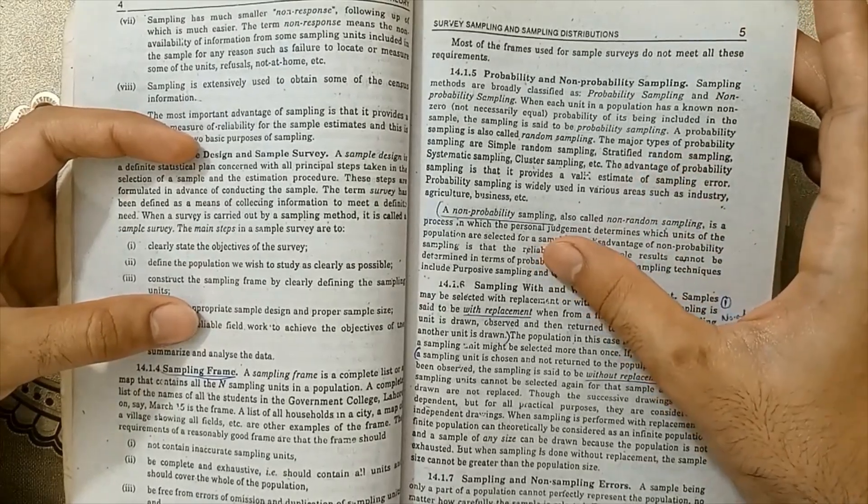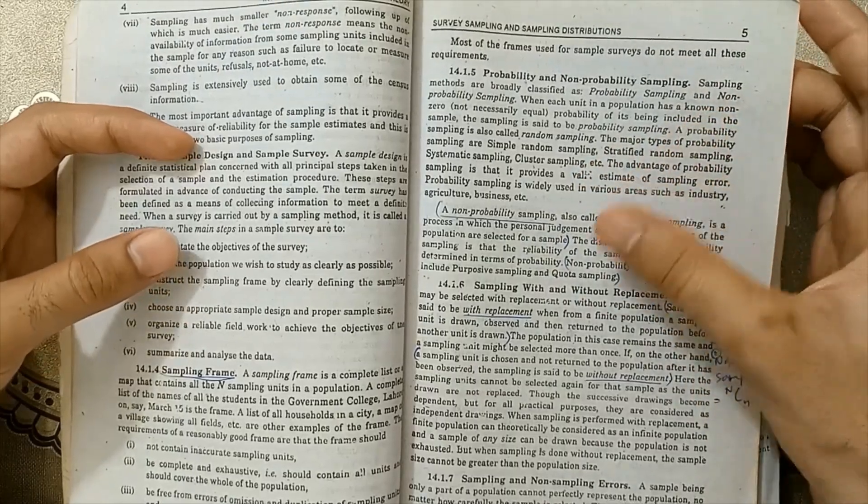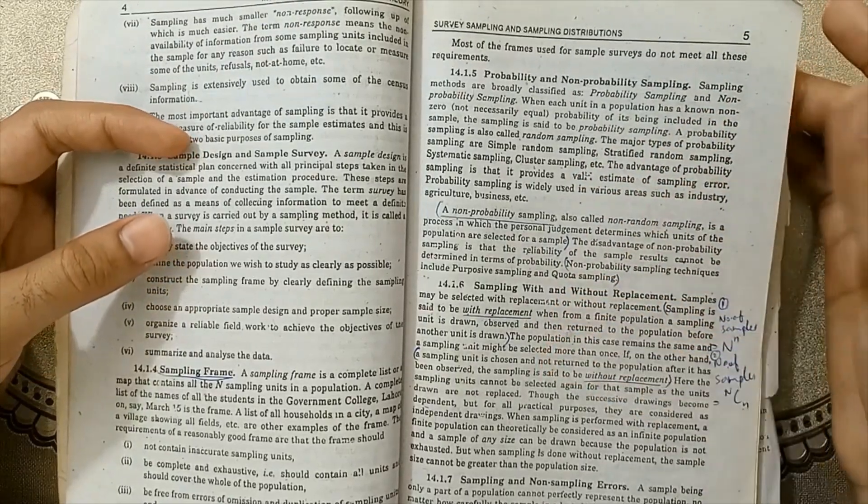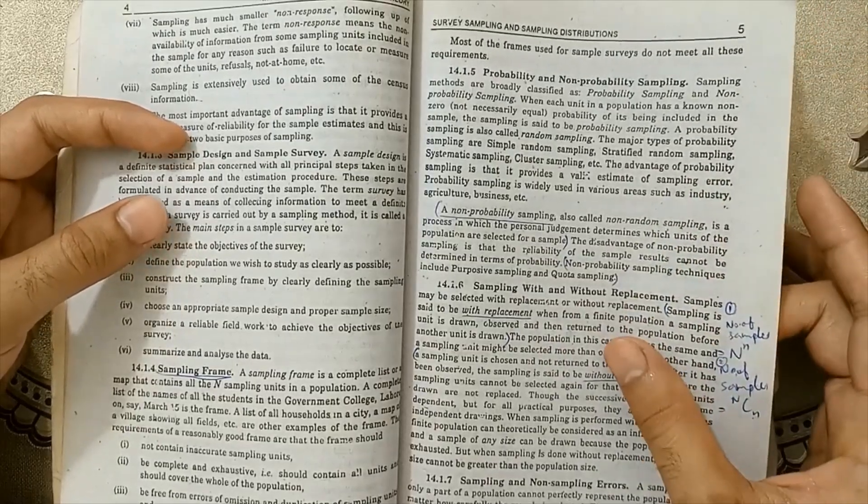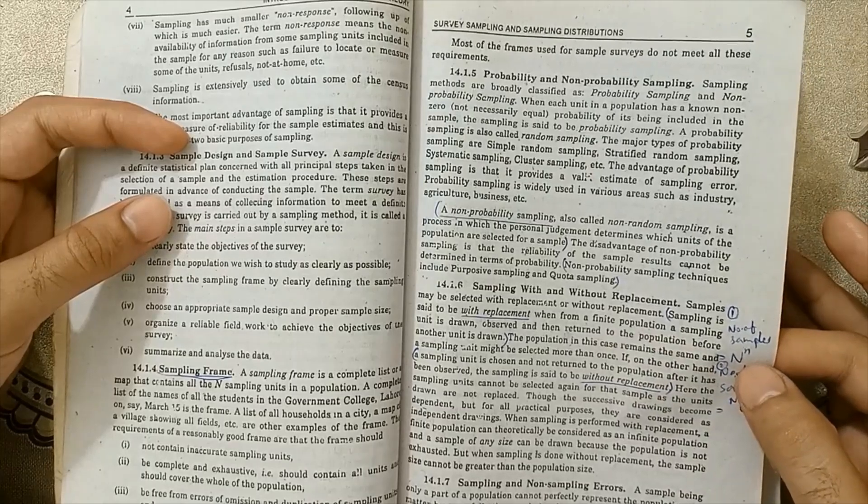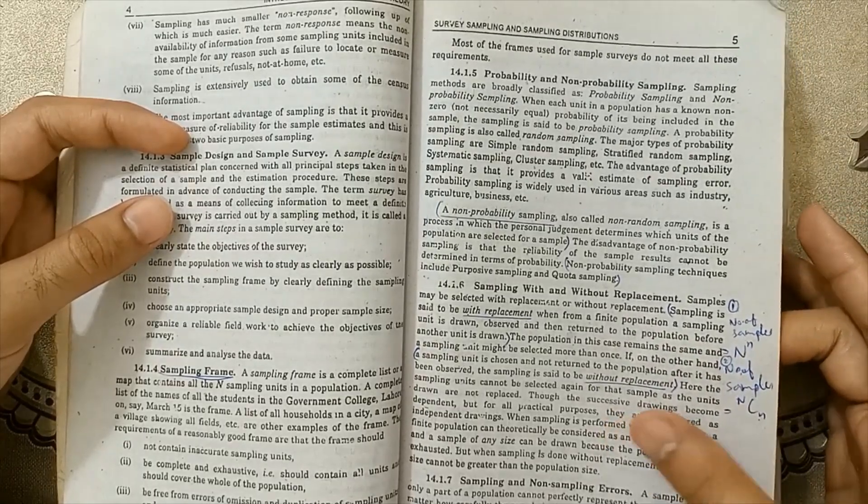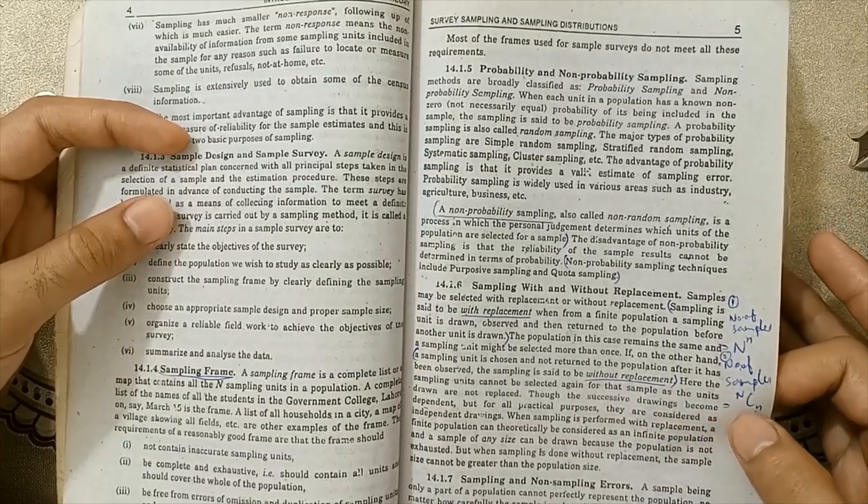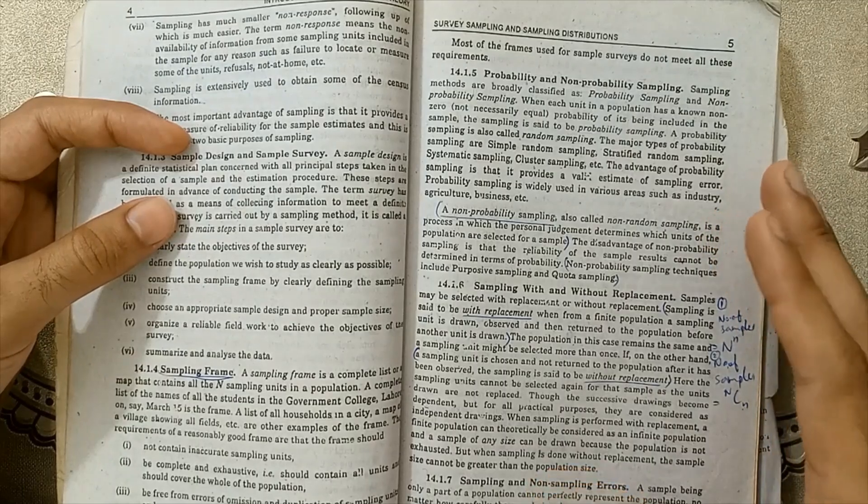Non-probability sampling and probability sampling are very important for exams. Next, sampling with replacement and sampling without replacement - with replacement we have number of samples N raised to n, but in sampling without replacement the formula is nCn. I've already discussed these lectures in Statistics Part 2.